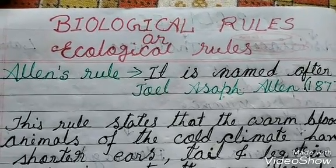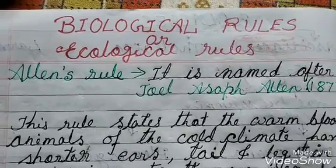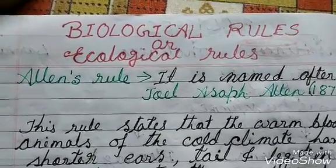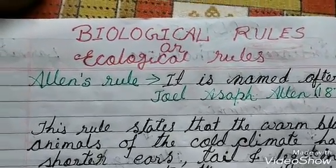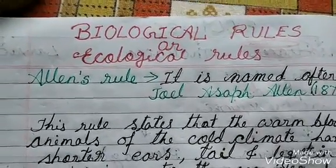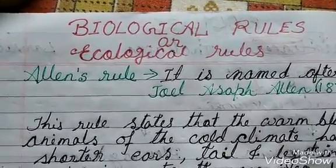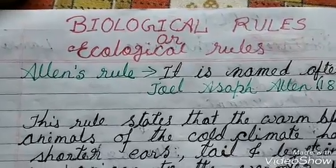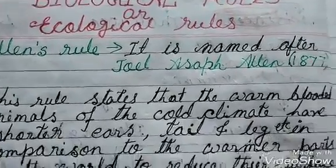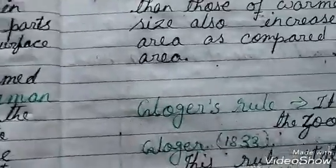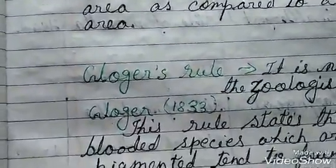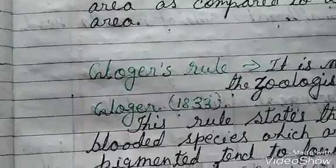Hello and welcome again. I am discussing here the biological rules, or the ecological rules. I have already discussed Allen's rule and Bergmann's rule. Today I am going to tell you about Gloger's rule and Jordan's rule.